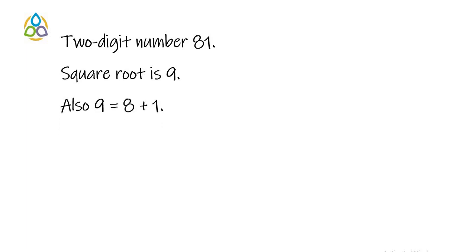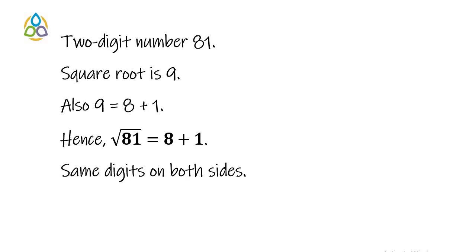We can write 9 as 8 plus 1. Therefore, the interesting relation is square root of 81 equals 8 plus 1. Look at the presence of the same digits on both sides. To the left hand side 8 and 1, to the right hand side is also 8 and 1.